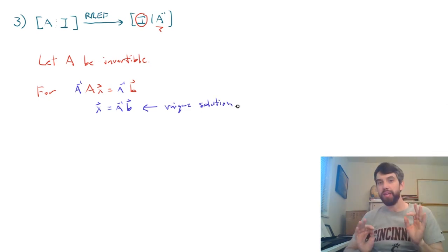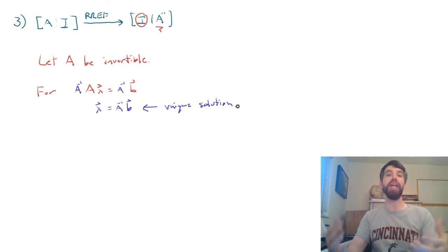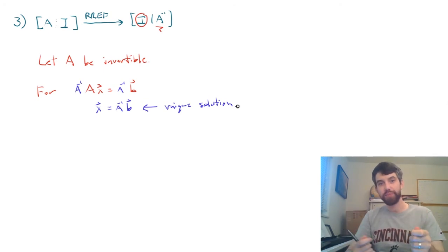Now, here's why that matters. We saw back in the day the Big Theorem, and the Big Theorem had a lot of different ways to relate different ideas when it came to matrices. And one of the ideas was a unique solution corresponded to something about the REF form of your matrix. In particular, it said this.